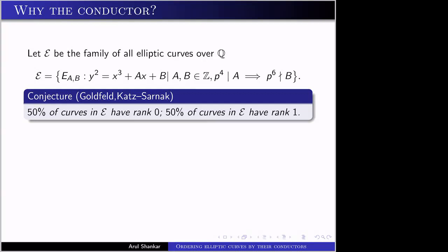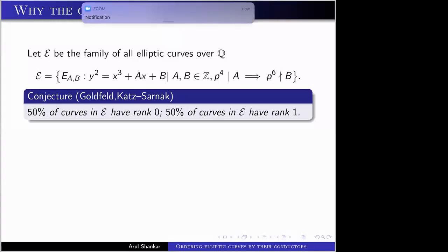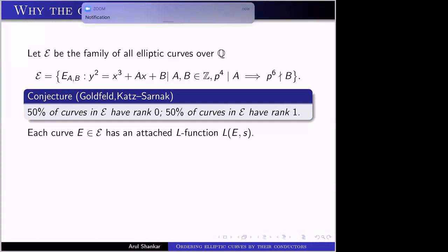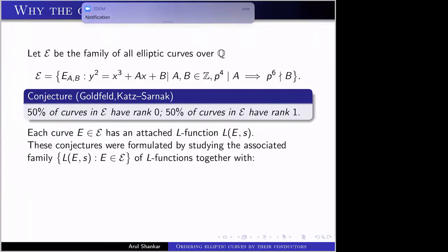This is not a precise conjecture because E is an infinite set. I have to tell you how the curves are ordered before I start talking about statistical questions like 50%. Normally, what we do is order the elliptic curves by height. But I want to make the case that ordering them by conductors is also a very natural thing to do. Given any elliptic curve over Q, you can attach an L-function to it, and these conjectures were formulated by studying the family of L-functions.